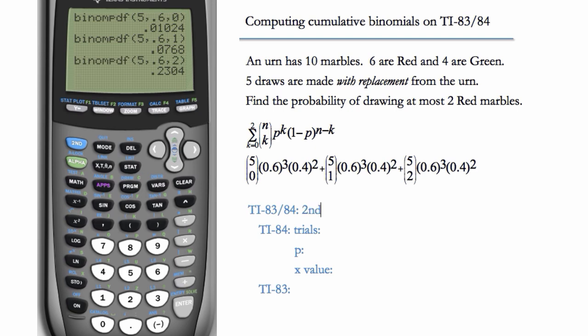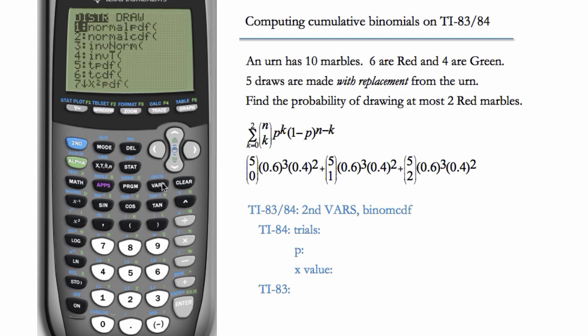So we're going to go to second vars again, but this time instead of choosing binompdf, we'll do binomcdf. So we'll go to second vars, binomcdf. C stands for cumulative, trials is five, p is 0.6.